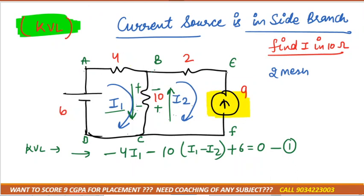So what we will do, we can go through B to E but we can't go through E to F. So what we will do, we will make the direct equation from the current source.